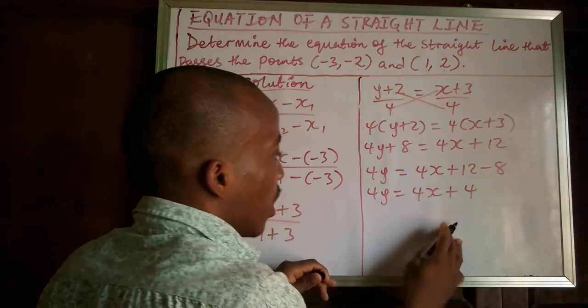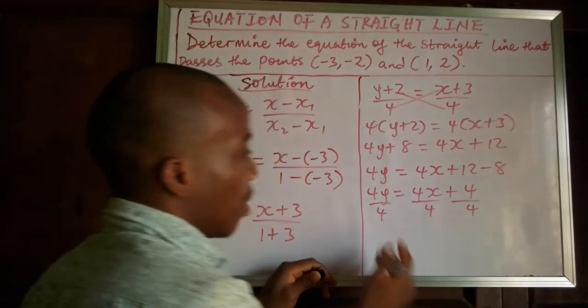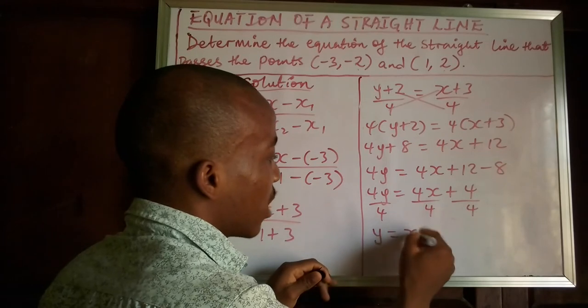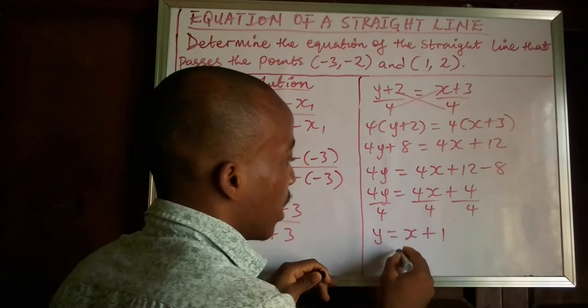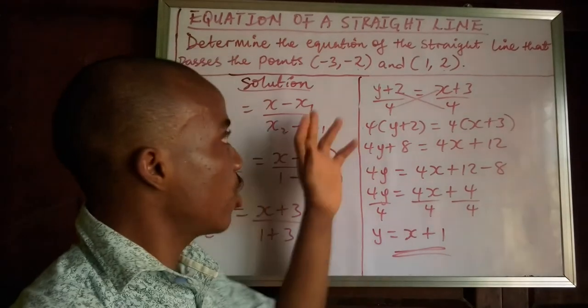So let me divide both sides, every side by 4 because they can be divided by 4. So here I am left with y is equal to x + 1. So I can say that this is the equation of the straight line that passes through this point.